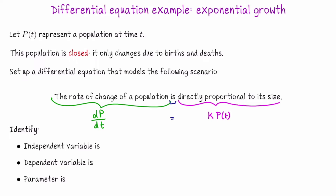Being directly proportional means there's a constant of proportionality k. Typically, when we write a differential equation like this, we suppress the dependence on t, so instead of writing P of t, we'll just write P, knowing that it means the function P of t. Our differential equation modeling the idea that the rate of change of a population is directly proportional to its size is dp/dt equals k times P. This is one of the most famous first-order differential equations in mathematics.